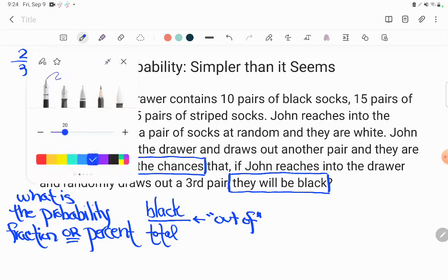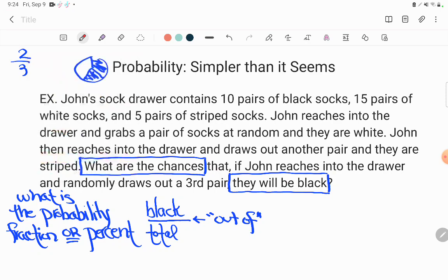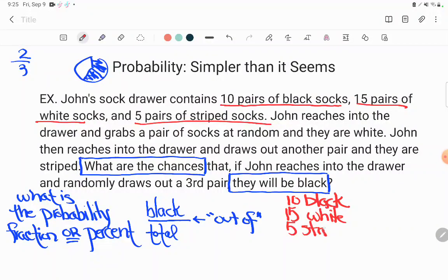Let's go ahead then and find this information. We need to know how many black socks, how many total socks. Let's see, John's sock drawer contains ten pairs of black socks, so I'll write that down: 10 black. Then we have 15 pairs of white socks, and then we have five pairs of striped socks.